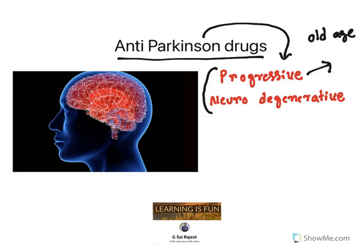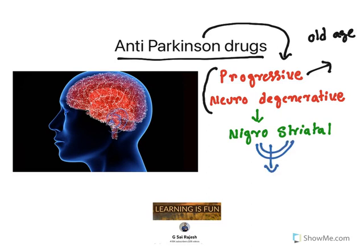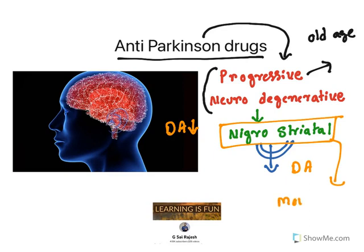Especially it occurs in the nigrostriatal pathway. There are neurons which are connecting substantia nigra and corpus striatum. These neurons get degenerated in Parkinson's disease, and the neurotransmitter in these neurons is dopamine. So there is a decreased level of dopamine because of this neurodegeneration. The nigrostriatal pathway is responsible for movements of the body, so when these neurons degenerate and the neurotransmitter is reduced, it affects movements of the human body. This is also known as a kind of movement disorder.